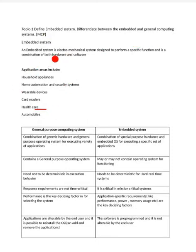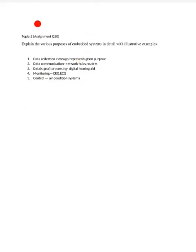For this question, you should not write any applications. Just give the definition of the embedded system with one or two examples, and along with that give the differences. If they ask for the purpose of the embedded system, for each and every purpose you have to give one example, and if they ask for more marks, explain the functionality.